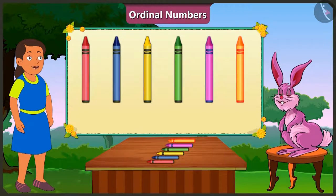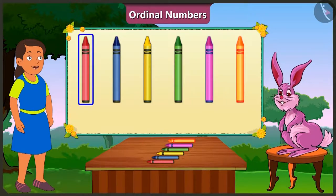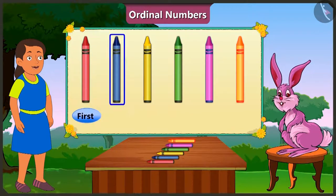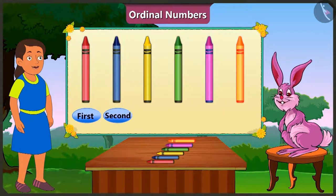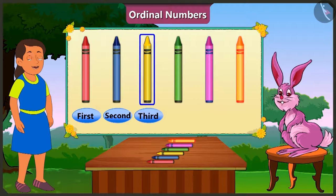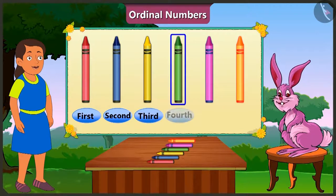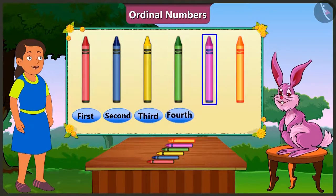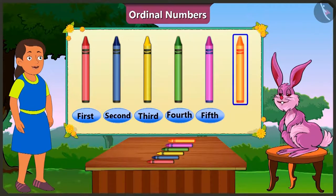This is why, in order to depict the order of crayons, we will give the first position to the red crayon, second to the blue crayon, third to the yellow crayon, fourth to the green crayon, fifth to the pink crayon, and sixth position to the orange crayon.